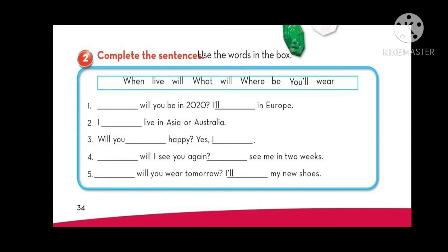Okay, now let's move to exercise number two. Complete the sentences. Use the words in the box. Let's read the words in the box. We have when, live, will, what, will, where, be, you will, and where. Okay, let's start with number one. Will you be in 2020? I will in Europe. Europe is a place, so I'm asking about a place. What question word do we use to ask about place? Where. That's right. So where will you be in 2020? I will live in Europe. That's right.